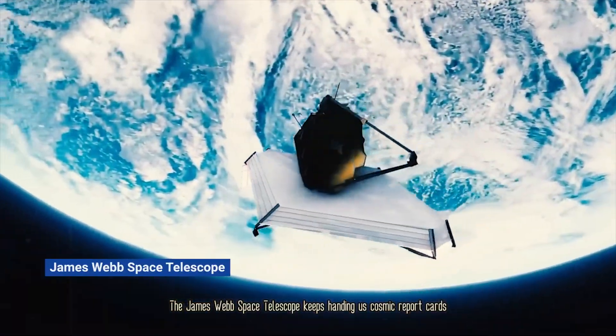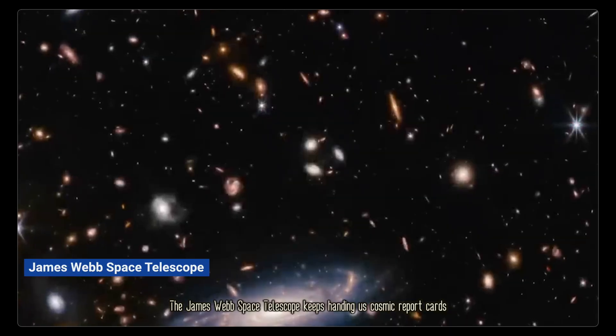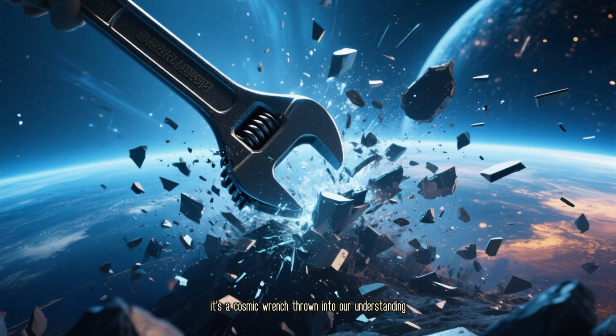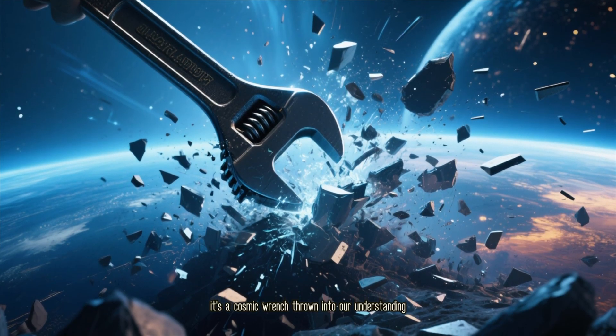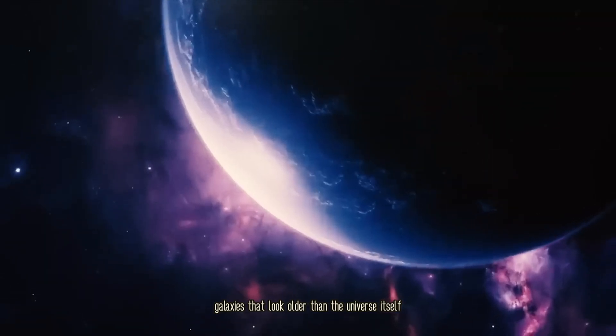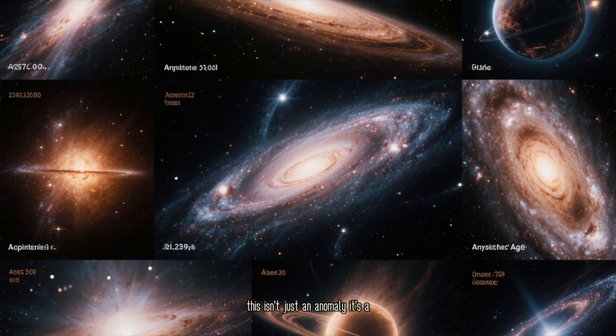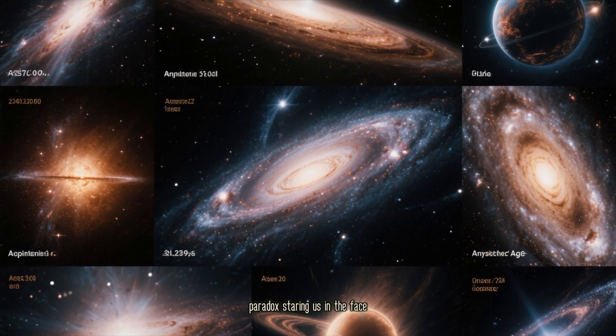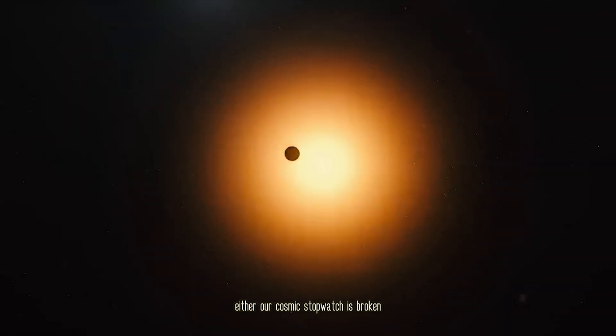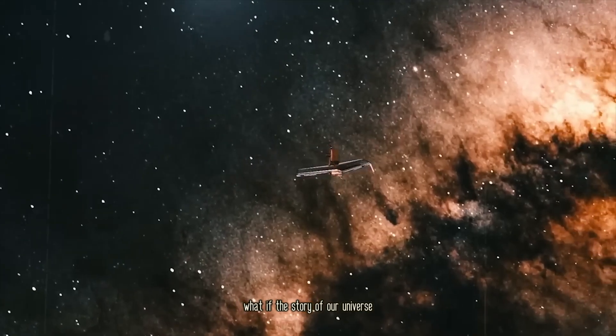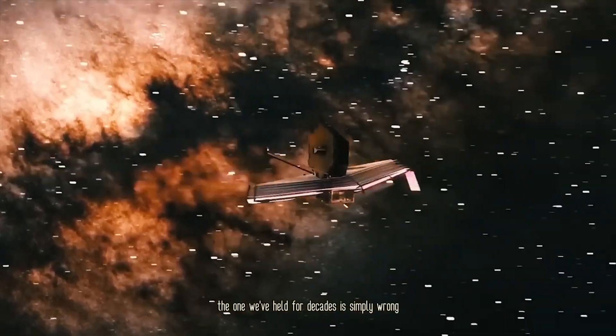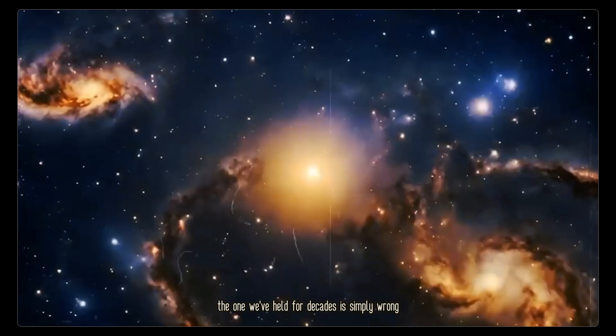The James Webb Space Telescope keeps handing us cosmic report cards, and let me tell you, the grades just shattered the curve. It's not just a minor adjustment, it's a cosmic wrench thrown into our understanding. Galaxies that look older than the universe itself are showing up in every deep field we take. This isn't just an anomaly, it's a paradox staring us in the face. Either our cosmic stopwatch is broken, or the Big Bang was not the first day of school. What if the story of our universe, the one we've held for decades, is simply wrong?